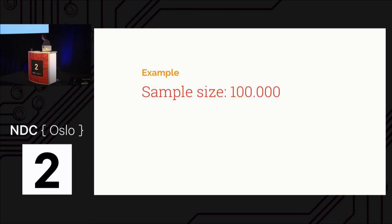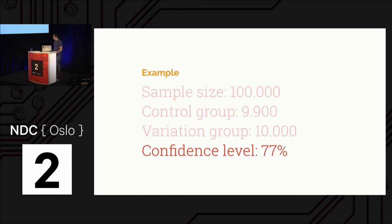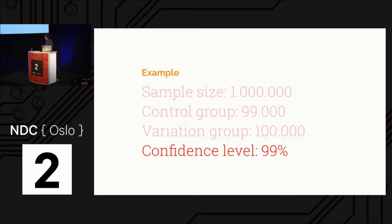If we go up to 1 million users, a 1% change will reach 99% confidence — you can be more or less certain it's real. That's why big giants like Google can run very small tests: they have such big sample sizes. Just a little change in clicks will actually be true for user behavior. So there's a 77% chance at 100,000 users that releasing the feature will give an increased number of button clicks compared to the control group.